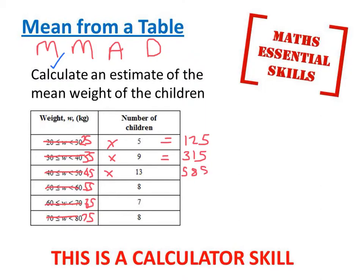55 multiplied by 8 is 440. 65 multiplied by 7 is 455. And 75 multiplied by 8 is 600. That's our multiplying done.